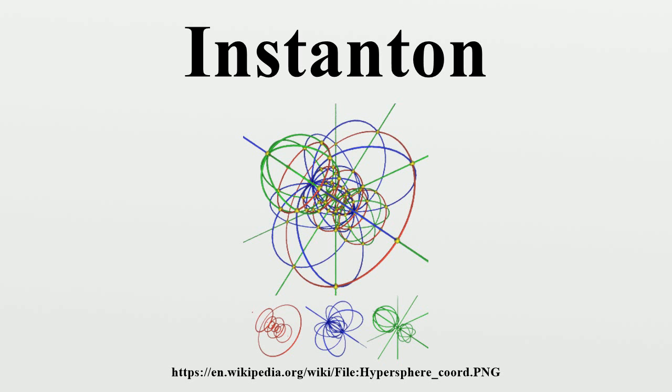In quantum field theory, an instanton is a topologically non-trivial field configuration in four-dimensional Euclidean space. Specifically, it refers to a Yang-Mills gauge field A which approaches pure gauge at spatial infinity. This means the field strength vanishes at infinity. The name instanton derives from the fact that these fields are localized in space and time, in other words, at a specific instant.